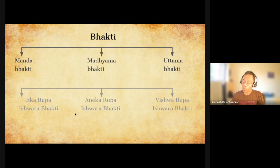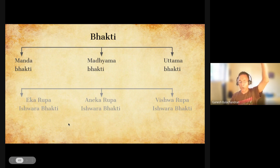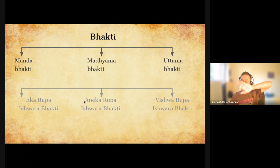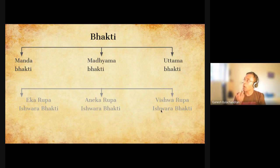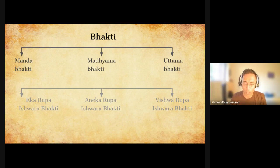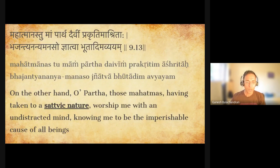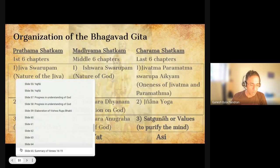There are different ways to worship. Some people worship Eka Rupa Ishwara — this is the only God. Then people realize there are many ways to worship God: Aneka Rupa Ishwara Bhakti. Then Vishwa Rupa Ishwara Bhakti — the entire universe is manifestation of Ishwara, as Maya coming into matter. Bhagavan is the Nimitta Karanam, the instrumental cause of this. The Brahman is the instrumental cause of the entire universe.